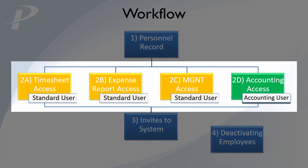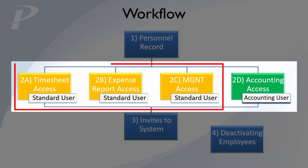Step 2: Access Levels. Access levels are broken into 4 options. Timesheet, Expense Report, and Management Access are all included in the Standard User Licensing, meaning all 3 are covered in the price you pay for each employee and do not cost extra. Providing access for each module is broken down into individual videos on this playlist, so you can review which functions are appropriate for each person.